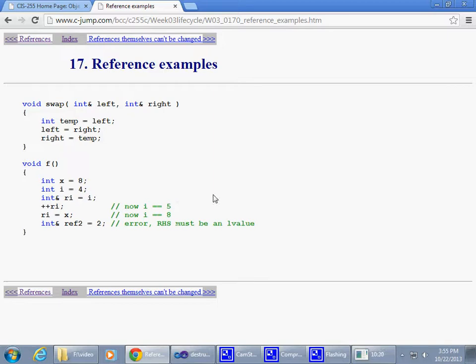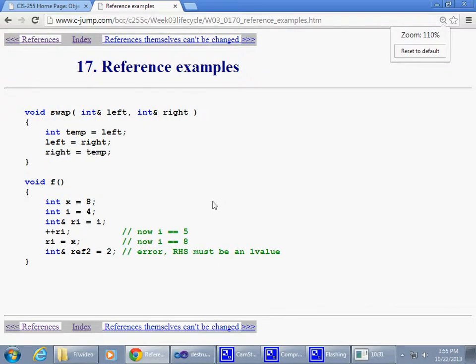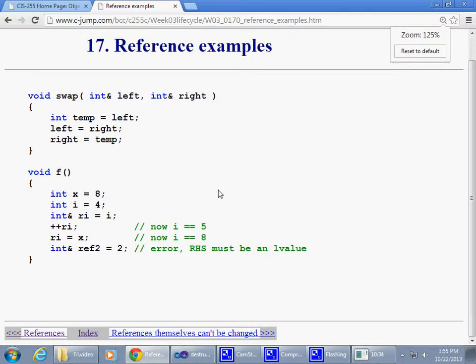So examples of references, let's carefully examine this. Here's an integer x and integer i, both are initialized to 8 and 4. Creating a reference to i, initializing it with i creates a reference. If you did this with a pointer, the pointer would be incremented because in order to use a pointer to modify the value you would have to dereference the pointer. With references, the story changes completely.